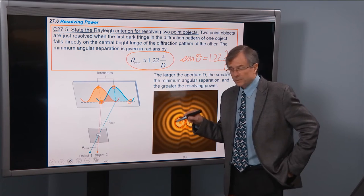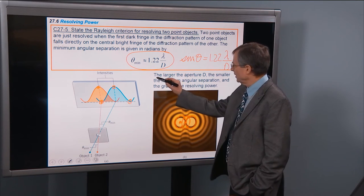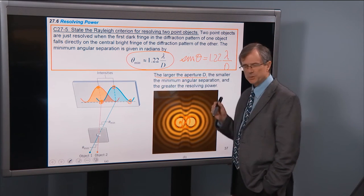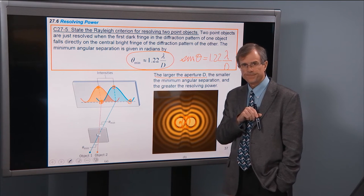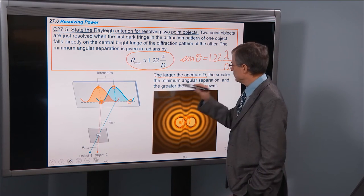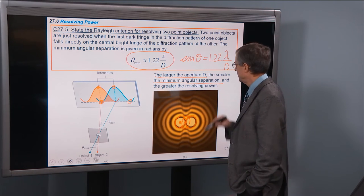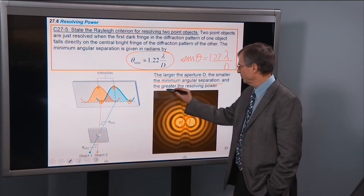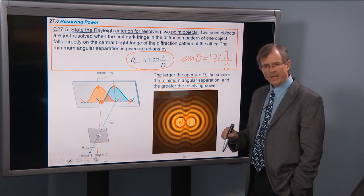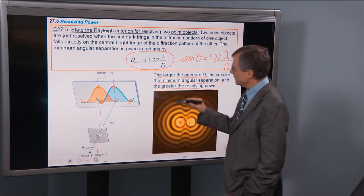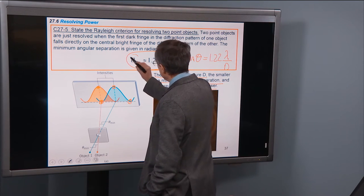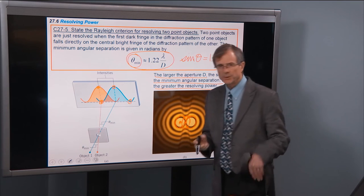But let me show you how those are related. But before I do, the larger the aperture d, the smaller the minimum angle, and the greater the resolving power. How does that come out?